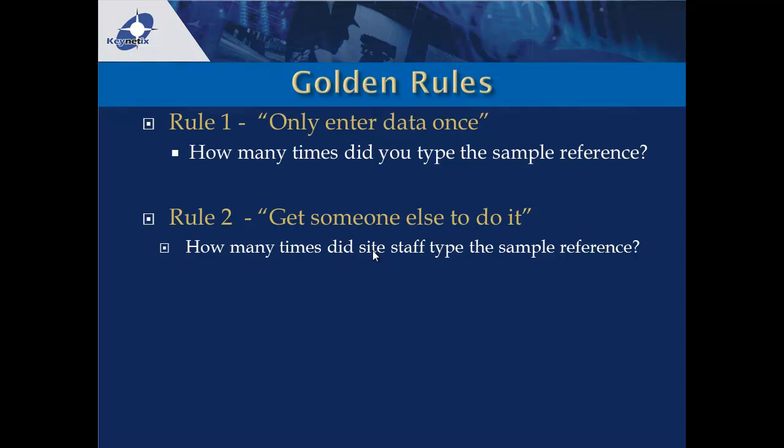The second golden rule of data entry is to get someone else to do it. By the time a sample gets to the laboratory, somebody has already entered the data — whether it's a technician or engineer on site logging into a site book, PDA logging, or Excel sheet logging — basically having told you what samples they're sending you, whether via chain of custody sheets, a schedule sheet, or whatever.